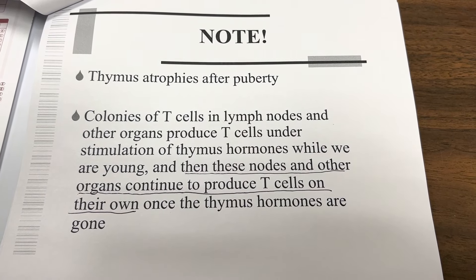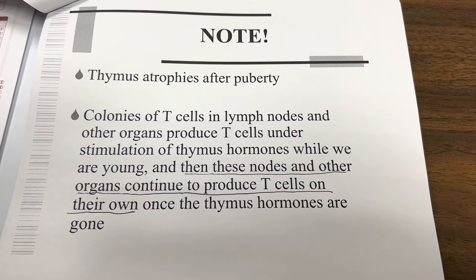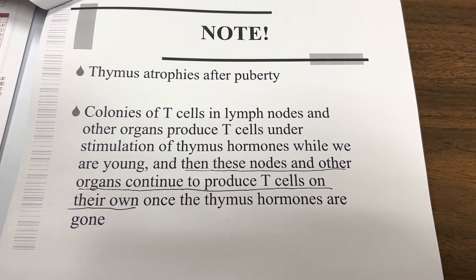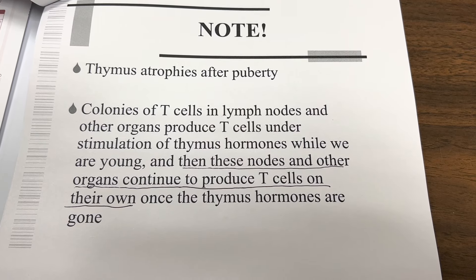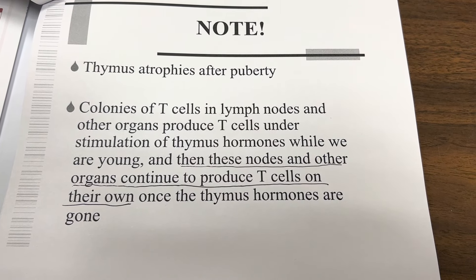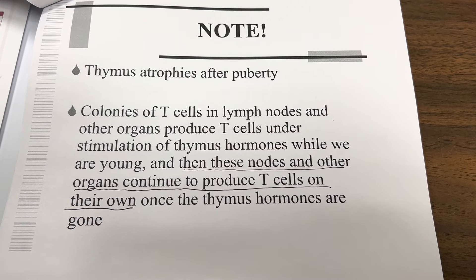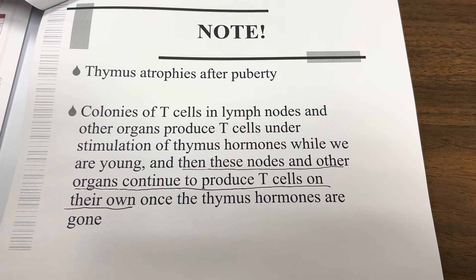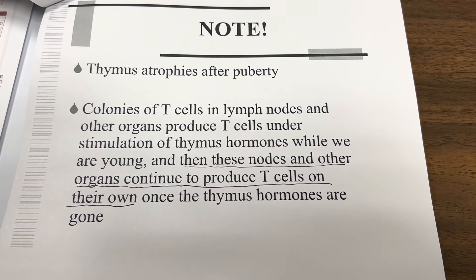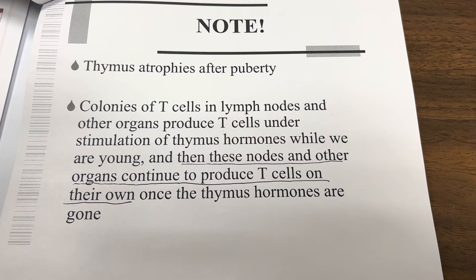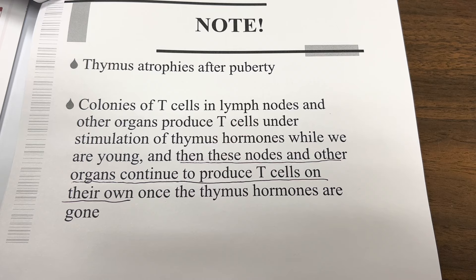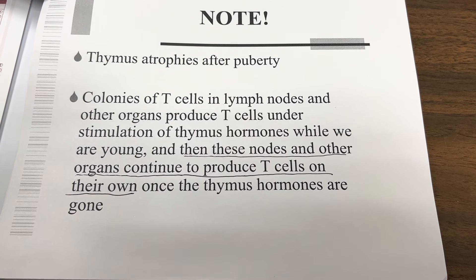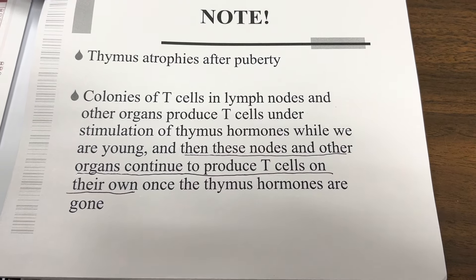The thymus atrophies after puberty — it disappears. However, colonies of T cells in the lymph nodes and other organs produce T cells under stimulation of thymus hormones while we are young, and then these nodes and organs continue to produce T cells on their own once the thymus hormones are gone.